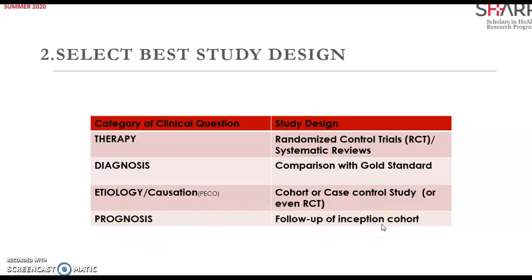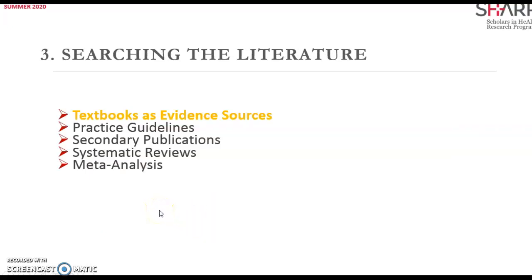For prognosis, the follow-up of inception cohort is used. Case series or case reports can also answer prognosis, etiology, or therapy questions, but not as strongly as the best study designs. They consist of either collections of reports on treatments of individual patients or reports of single patients. Where should I look for the best literature on evidence?